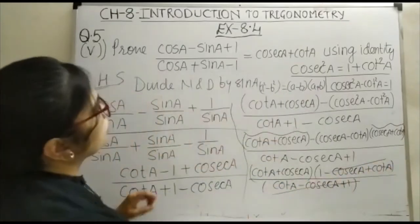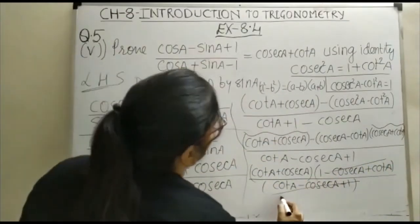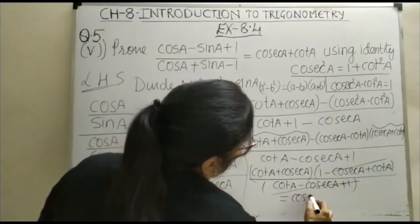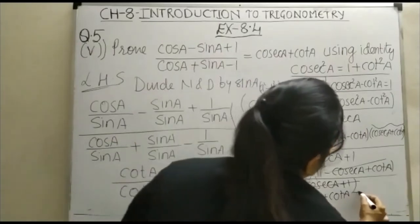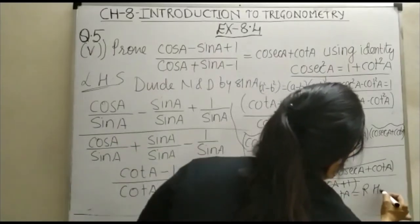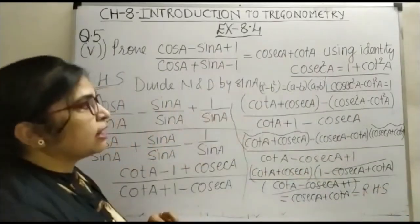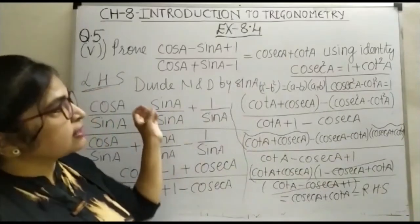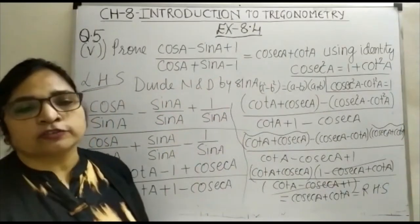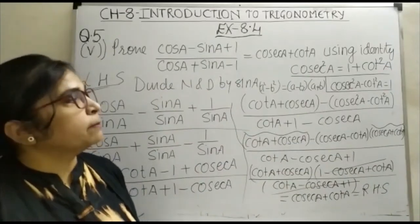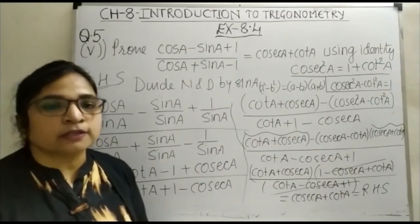This term is cancelled. And we are here what we have to prove that is cosecA plus cotA and no doubt this is equal to your right hand side. So, this is how we have proved LHS is equal to RHS by using the identity cosec square A is equal to 1 plus cot square A. Thank you.